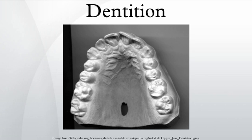The incisors occupy the front of the tooth row in both upper and lower jaws. They are normally flat, chisel-shaped teeth that meet in an edge-to-edge bite. Their function is cutting, slicing, or gnawing food into manageable pieces that fit into the mouth for further chewing. The canines are immediately behind the incisors.